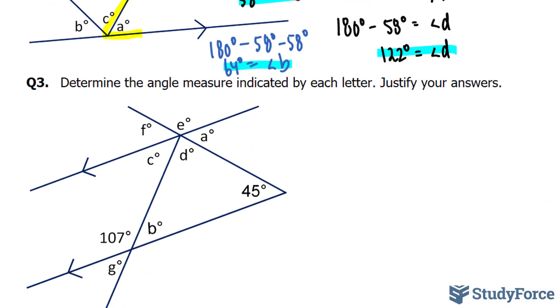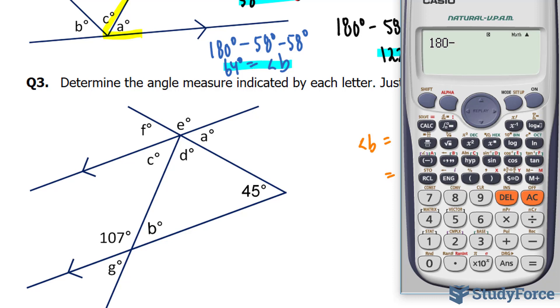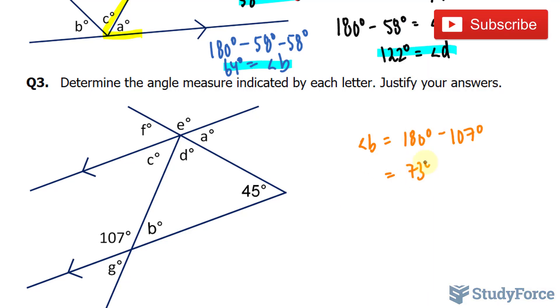This one is slightly more difficult than all of the other questions we've done. I'm going to start by focusing on this side of my figure. Notice that 107 and B are supplementary angles. So I can find B by taking 180 degrees and subtracting it from 107 degrees. 180 minus 107 is 73. Now we can find G because B and G are opposite angles. If that's 73, so is G.